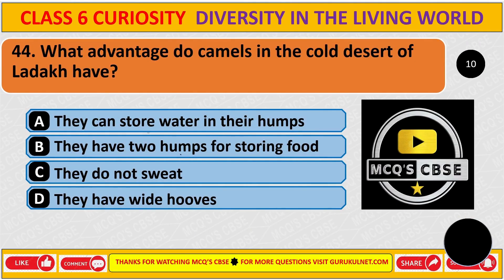What advantage do camels in the cold desert of Ladakh have? The correct answer is B: they have two humps for storing food.